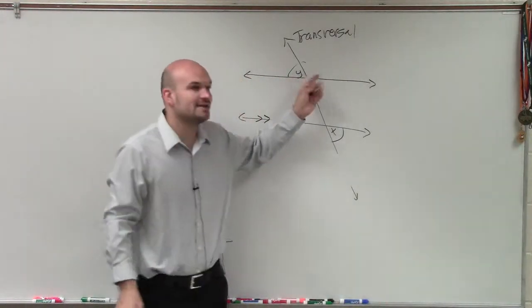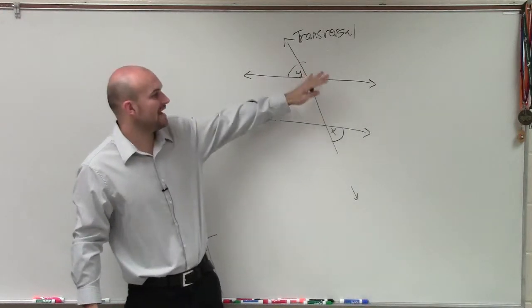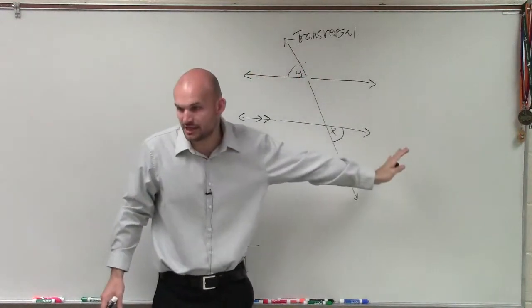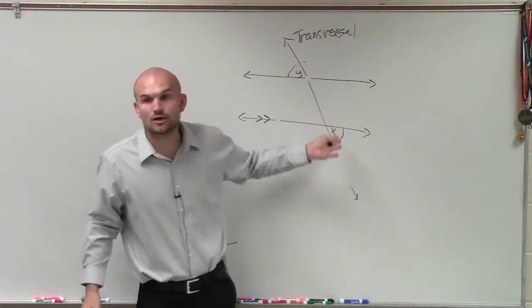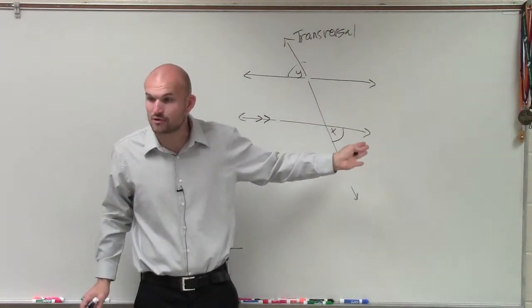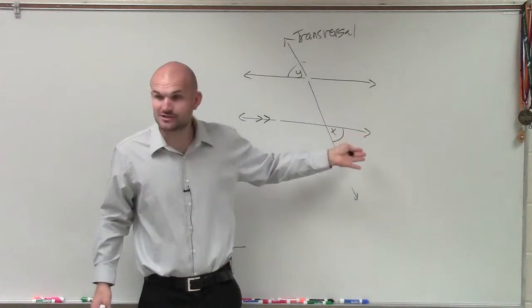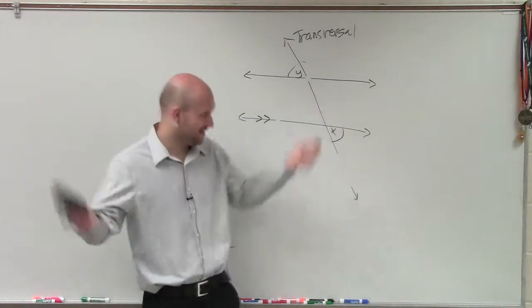And then we need to look at, so on the transversal, we have an angle that's on one side and the angle that's on the other side. So we call those alternating. And then these two angles, are they located in the interior of the two lines or the exterior? Exterior. Exterior. So we call them alternate exterior.